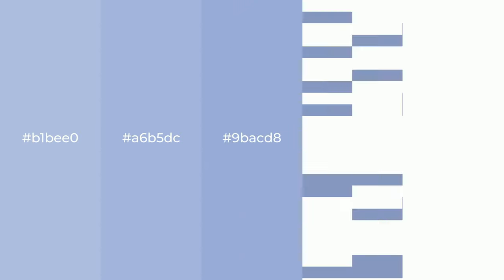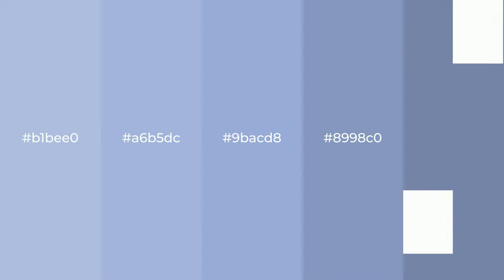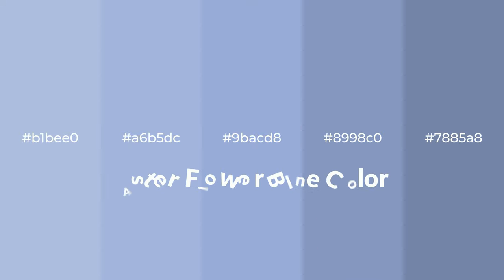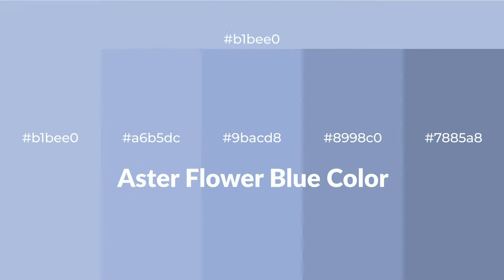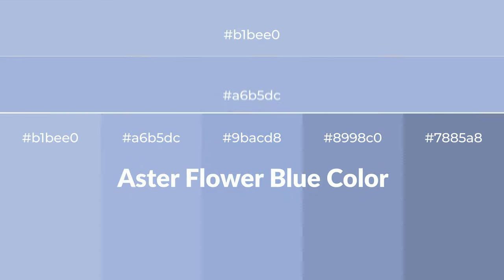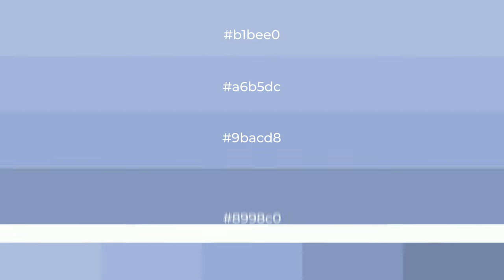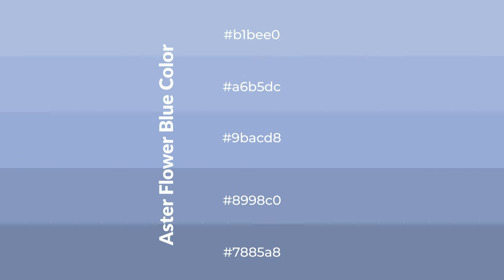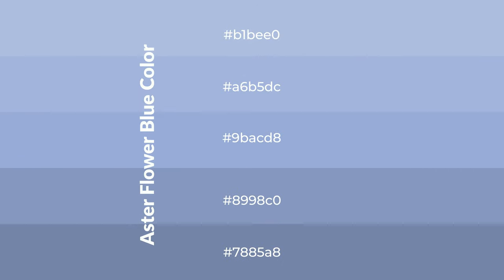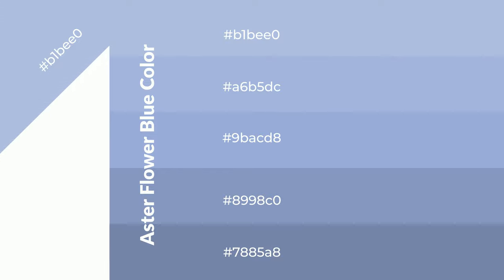Cool shades of aster flower blue color with blue hue for your next project. To generate tints of a color, we add white to the color. Tints create light and exquisite emotions. To generate shades of a color, we add black to the color. Shades are used in patterns, 3D effects, and layers, and they create depth and drama.